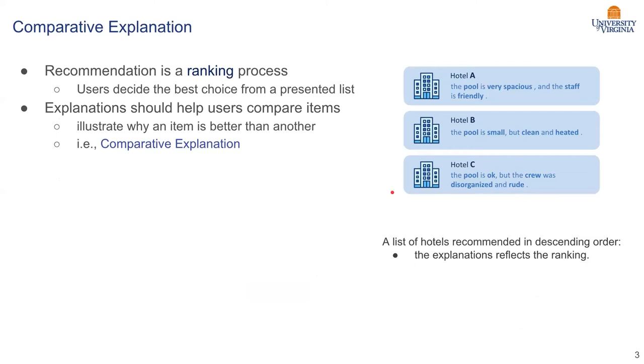However, we feel this is not perfect because the recommendation is eventually a ranking process. The user basically based on a ranked list of items to choose which fits them best. Therefore, the corresponding explanation should also help the user compare the items. This corresponding explanation should also illustrate this kind of ranking. We call this the comparative explanation.